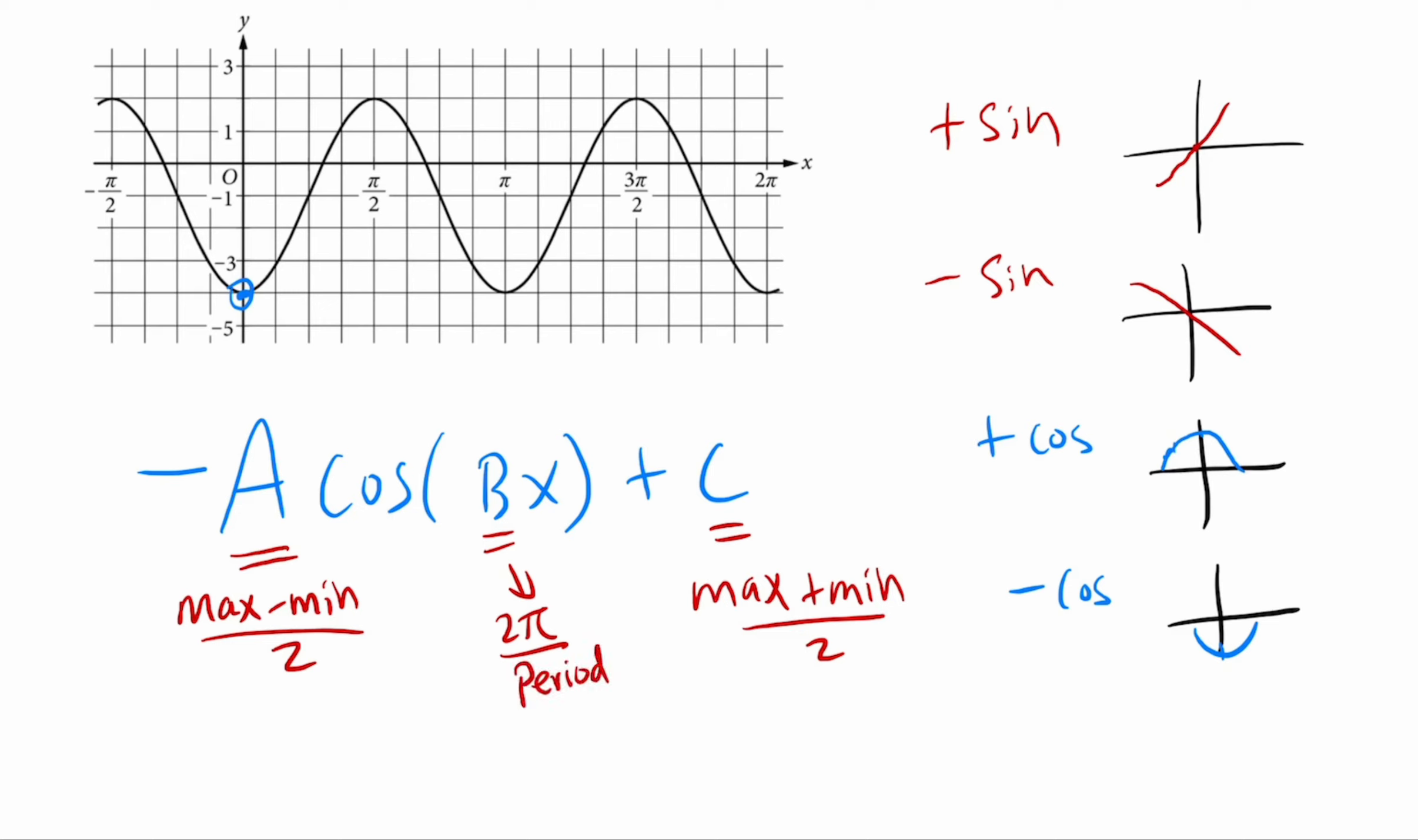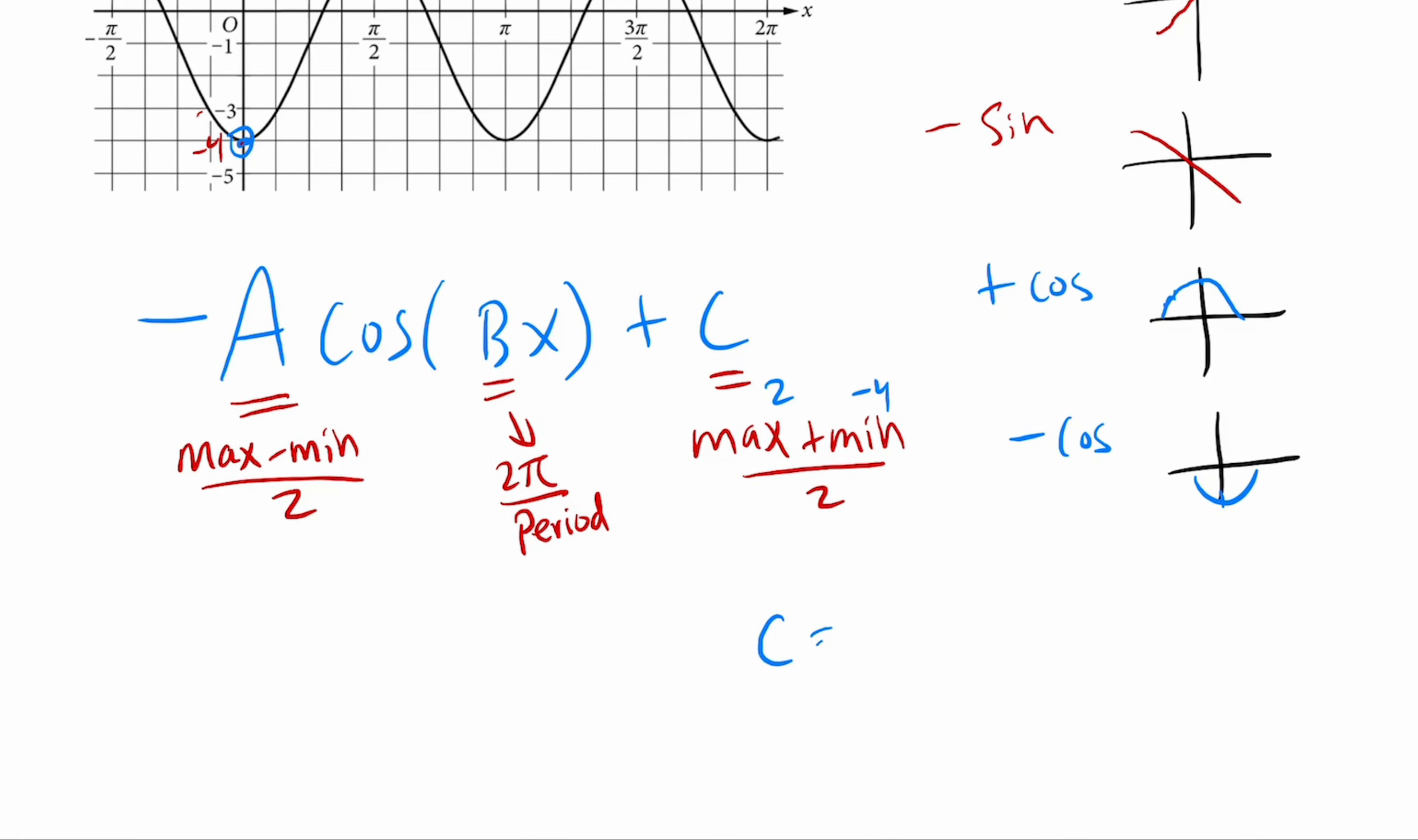So let's first find the C, the center. The maximum here on this trig function occurs at either of these y values. So the maximum y value is 2 according to this graph. The minimum y value here, we could sort of see if negative 3 is over here and this goes by 1, this would be at negative 4. So the max is 2, the min is negative 4. So if we average them, if we average 2 and negative 4 by doing 2 plus negative 4 divided by 2, that would be, 2 plus negative 4 is negative 2. Negative 2 divided by 2 is negative 1. So the C here so far is negative 1.